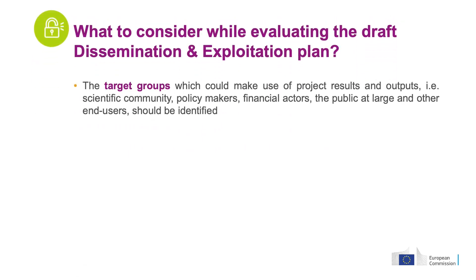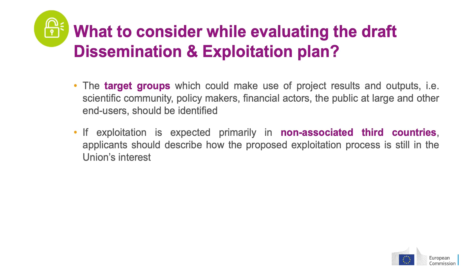Let's consider now the target groups which could make use of the project results and outputs. That is, the scientific community, policy makers, financial actors, the public at large and other end users should be identified. In our example, the proposal could consider specific European airports or the European Union Aviation Safety Agency as potential users of the proposed solution. If the target groups are identified, the score will be higher. In addition, if exploitation is expected primarily in non-associated third countries, applicants should describe how the proposed exploitation process is still in the Union's interest. In our case, if the exploitation of the solution is proposed to take place in Senegal, the proposal could highlight that the proposed solution is going to affect positively the European companies using Dakar Airport as a transit hub.